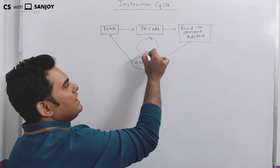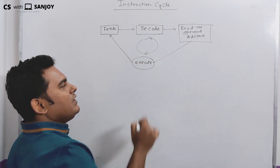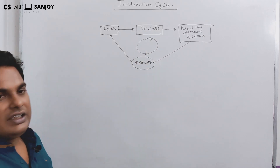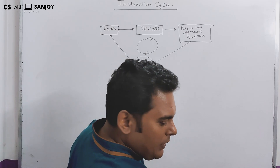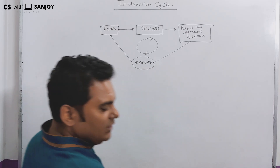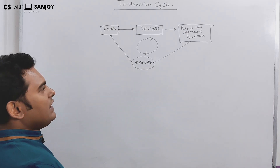This continues until we encounter the HALT instruction. That's why it is called the instruction cycle. The visualization is defined in the instruction cycle, showing how it affects the execution of instructions.